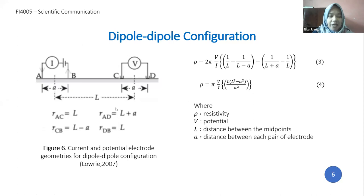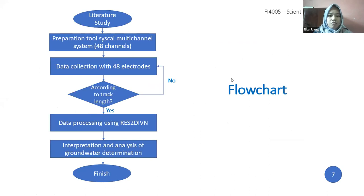By entering these values into the equation, the resistivity measurement can be calculated using Equations 3 and 4. The overall research flow can be seen in this flowchart.